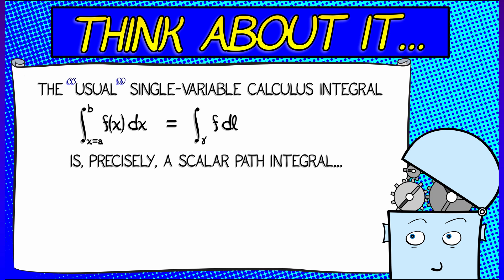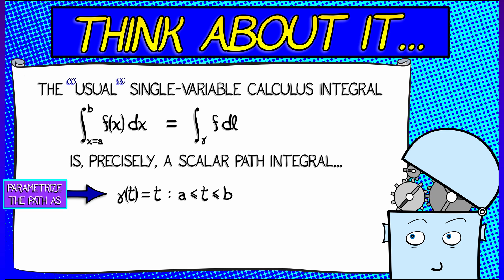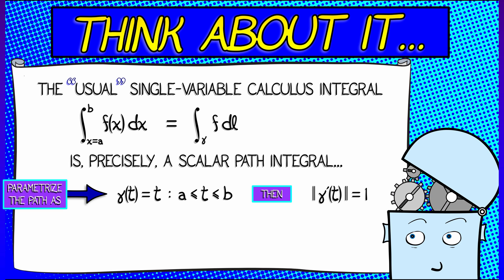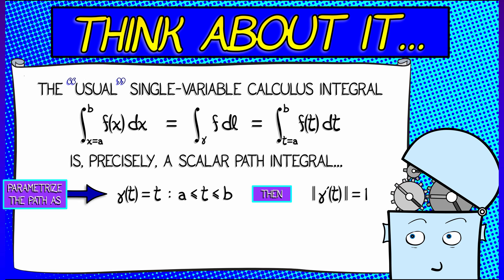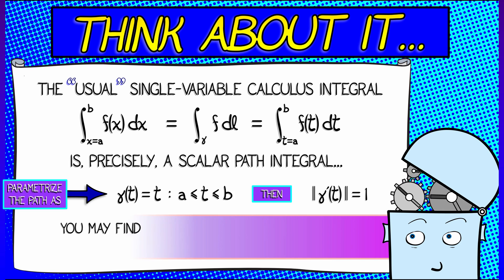It's the integral of f dl over a path gamma. What path gamma? Let's do the simplest possible thing. Let's take gamma of t equals t, as t goes from a to b. Then following the form: what's the length of the derivative of gamma? Of course, that's just one. And what that means is that the integral of f dl over this gamma is the integral of f of t dt, as t goes from a to b. Swapping out t for x takes us right back to the usual single variable calculus integral.